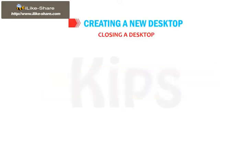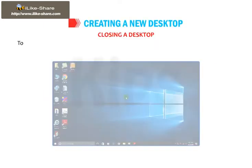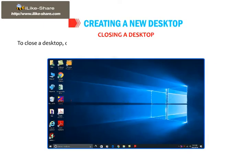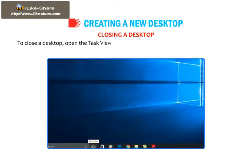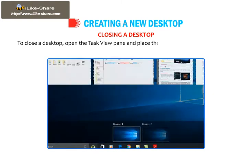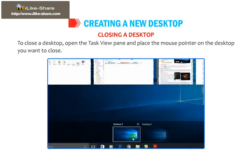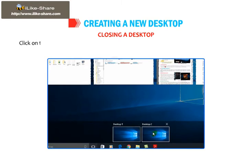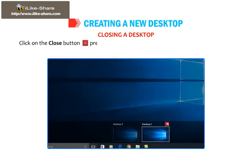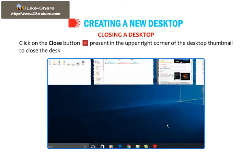Now let me tell you how to close a desktop. To close a desktop, open the Task View pane and place the mouse pointer on the desktop you want to close. Click on the Close button present in the upper right corner of the desktop thumbnail to close the desktop.